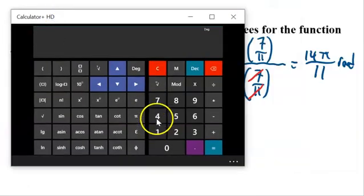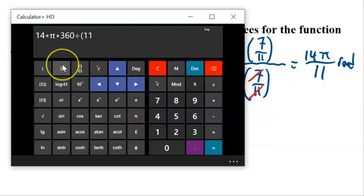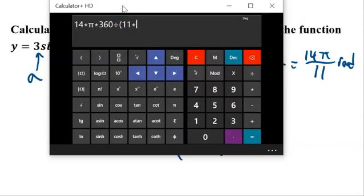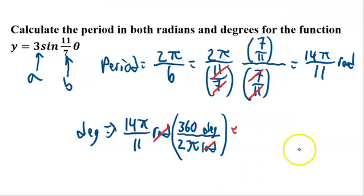So 14 times pi times 360 divided by, now we've got to do brackets here, 11 times 2 times pi. Well, pi cancels out, I didn't have to include pi, but that's okay. 229 approximately, 229 degrees.